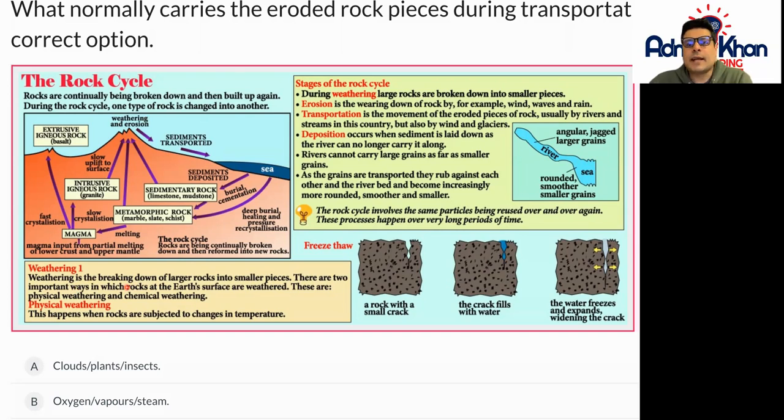Weathering is the breakdown of larger rocks into smaller pieces. There are two important ways in which rocks at the earth's surface are weathered: physical weathering and chemical weathering. Physical weathering happens when rocks are subjected to changes in temperatures.